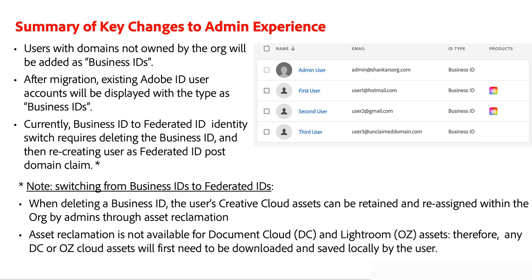Let's conclude with a brief summary of key admin experience changes specific to user profiles. Users with domains not owned by the org will be added as business IDs. After migration, existing Adobe ID user accounts will be displayed with the type business ID. Currently, switching from a business ID to a federated ID requires deleting the business ID and then recreating the user as a federated ID after the company has claimed the domain. When deleting a business ID, the user's Creative Cloud assets can be retained and reassigned within the org by admins through asset reclamation. However, please note that asset reclamation is not available for Document Cloud or Lightroom assets — those assets will first need to be downloaded and saved locally by the user.